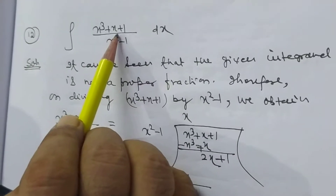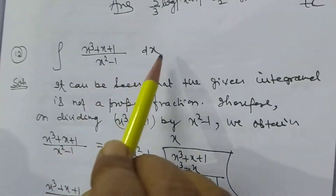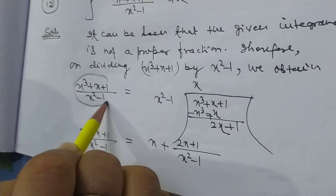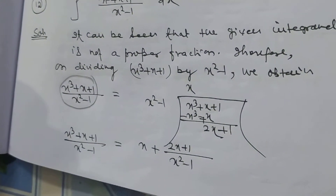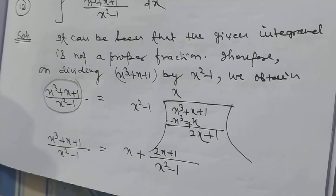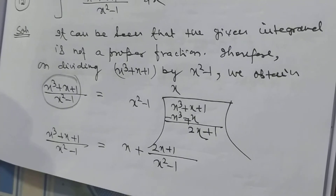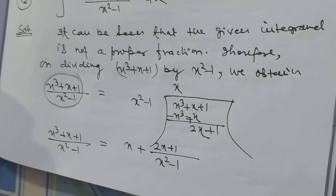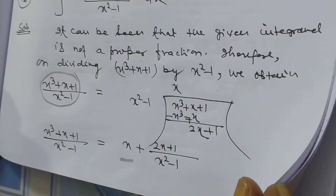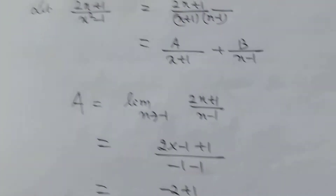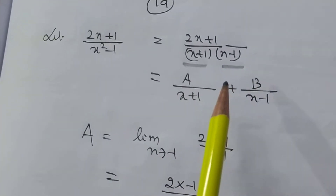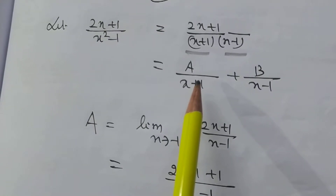Next problem is problem number 12: ∫(x³ + x + 1)/(x² - 1) dx. We observe that it is not a proper fraction, since the degree of the numerator is higher than the denominator. So we divide the numerator by the denominator to make it proper. After division, the quotient is x and the remainder is 2x + 1. So (2x + 1)/(x² - 1) can be written as (2x + 1)/[(x + 1)(x - 1)], and we can solve this part as problem number 1.